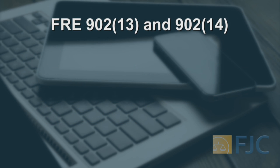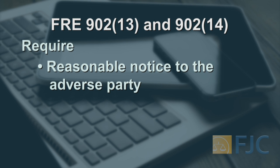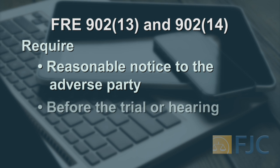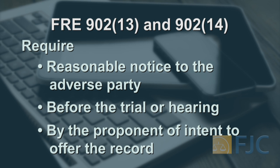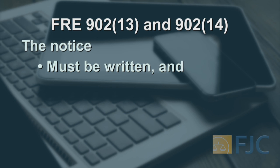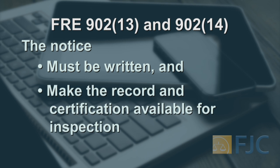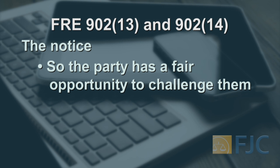New Sections 13 and 14, like previously existing Sections 11 and 12, require reasonable written notice before the trial or hearing to the adverse party by the proponent of his or her intent to offer the record. That notice must make the record and certification available for inspection so that the party has a fair opportunity to challenge them.